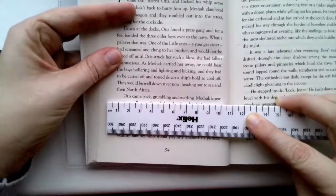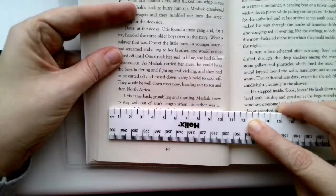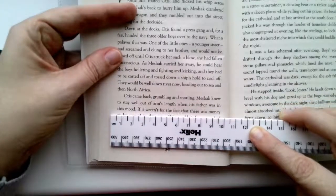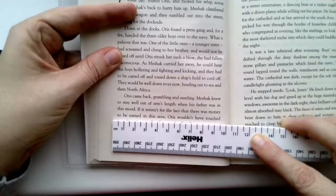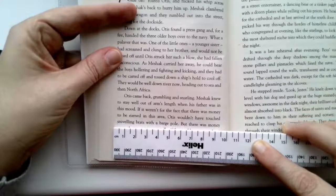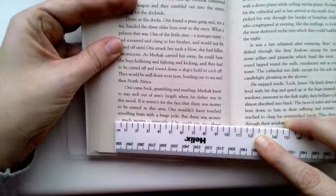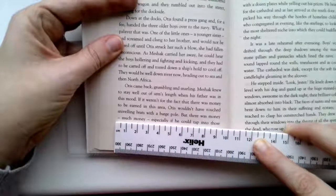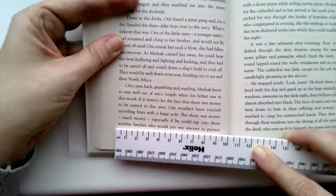Otis came back grumbling and snarling. Meshac knew to stay well out of arm's length when his father was in this mood. If it weren't for the fact that there was money to be earned in this area, Otis wouldn't have touched sniveling brats with a barge pole. But there was money, much money, especially if he could tap into those wealthy families who would pay any amount to protect their respectability.